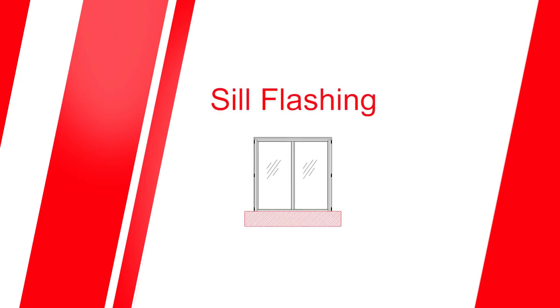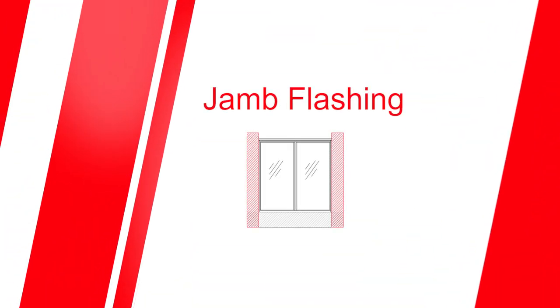The seal flashing is fitted to the bottom of the window and extends on either side at least 150 millimeters. The jam flashing should be at least 150 millimeters wide and attached to both sides of the window, starting 150 millimeters above the window and continuing down to overlap the seal flashing.